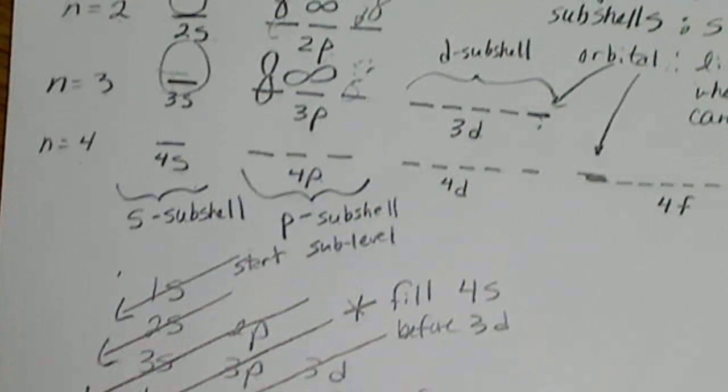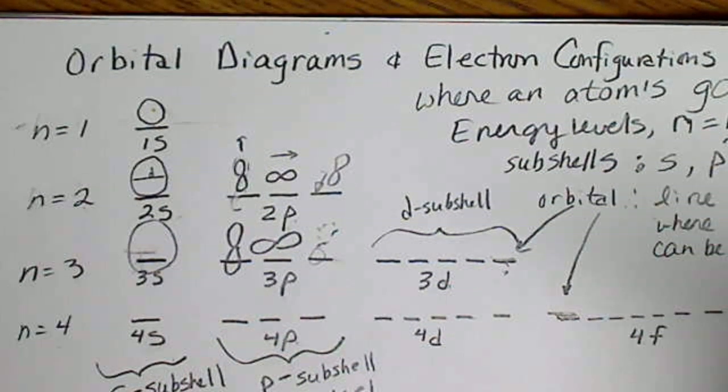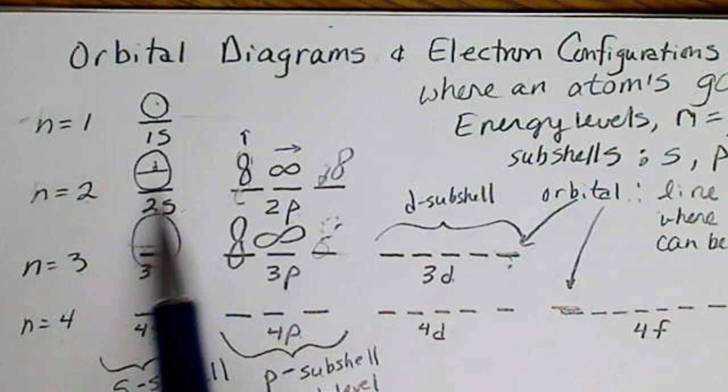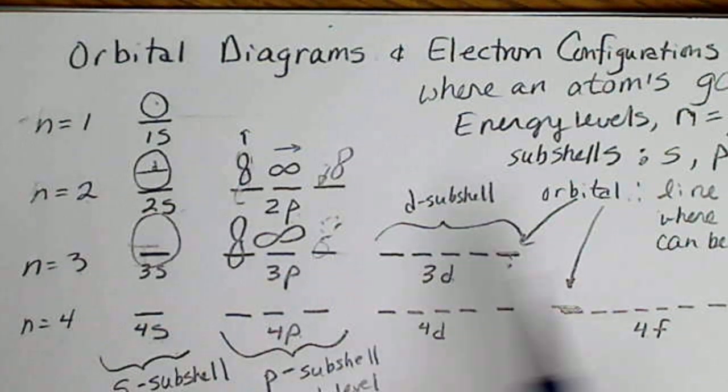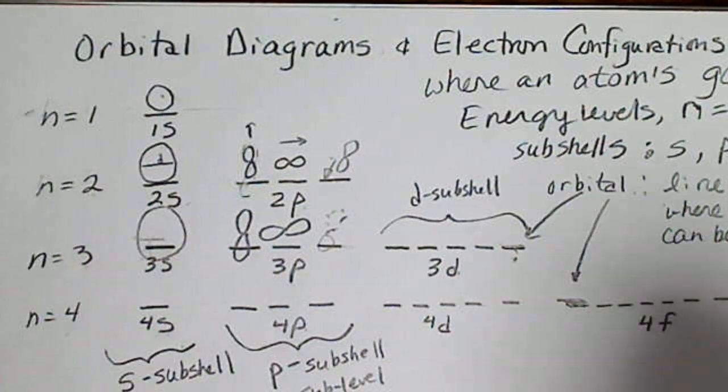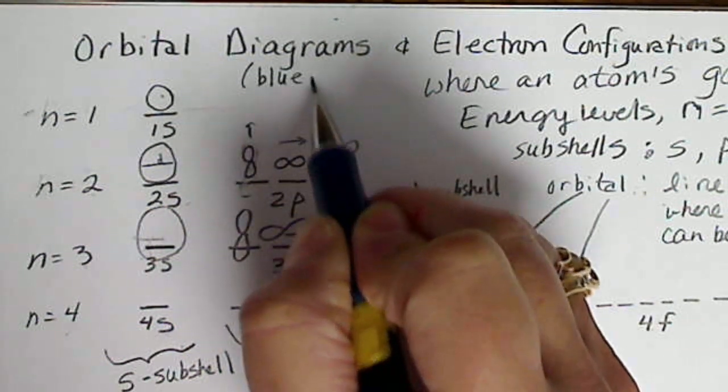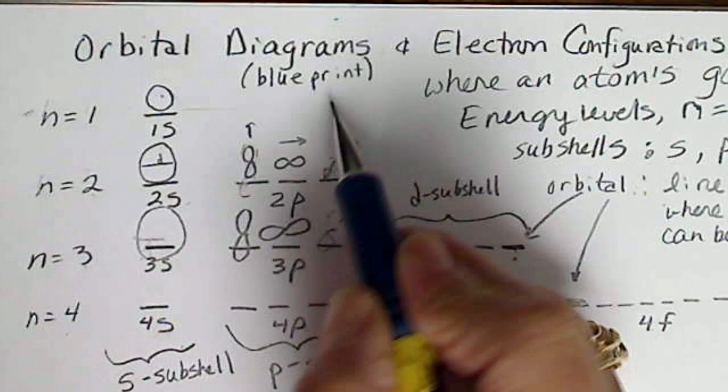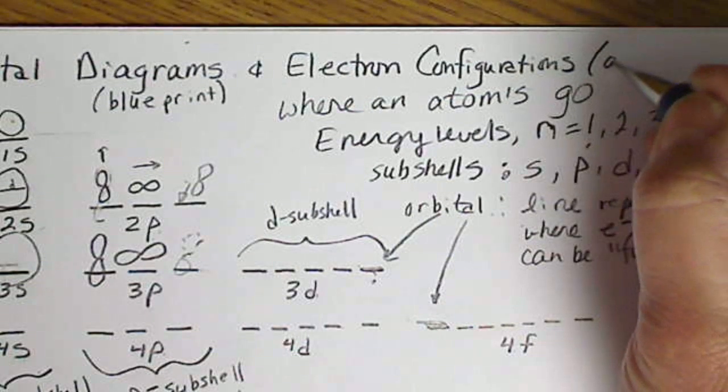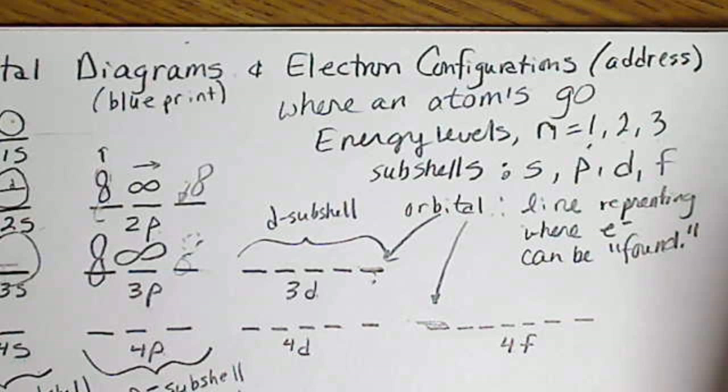So once we select the atom that we're going to draw an orbital diagram for, depending on how many electrons there are, we'll put them in the orbitals, and then from the orbital diagram, we'll come up with an electron configuration. So I generally refer to an orbital diagram as kind of a blueprint on a building where you can find certain things. And the electron configurations end up looking more like an address or a code where we can find the electrons.